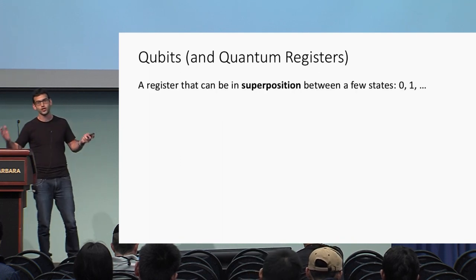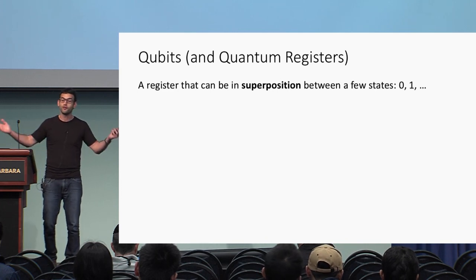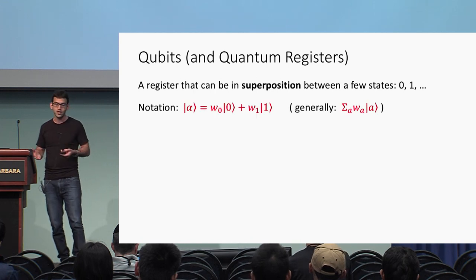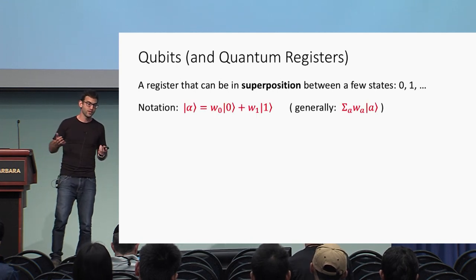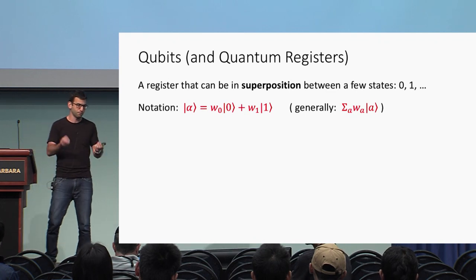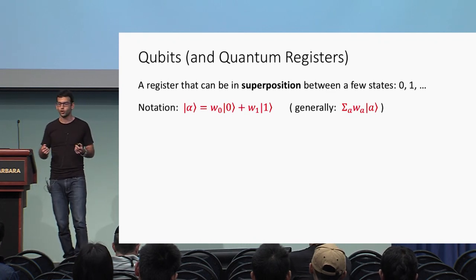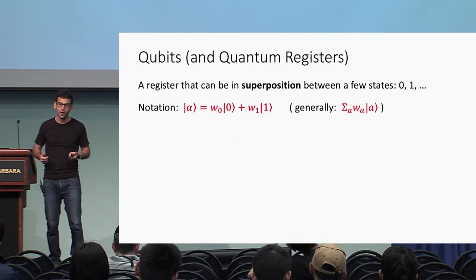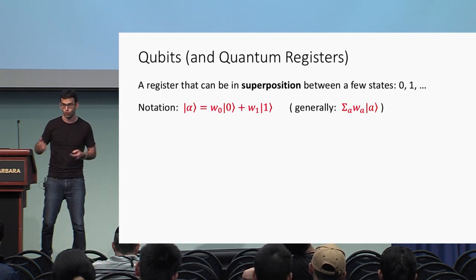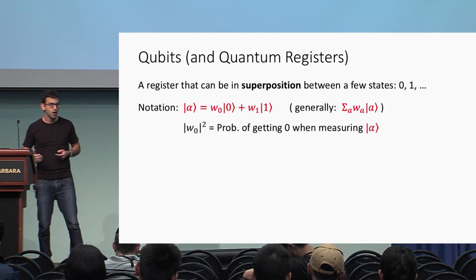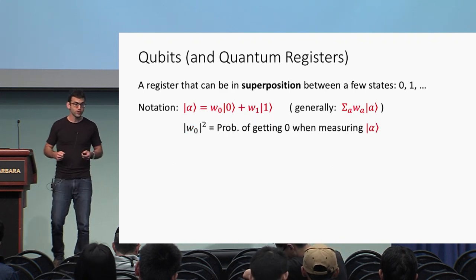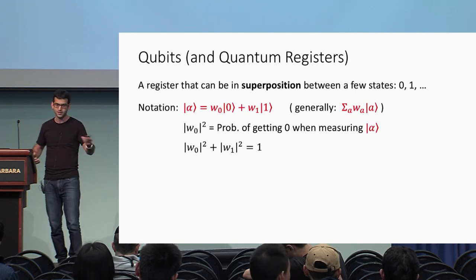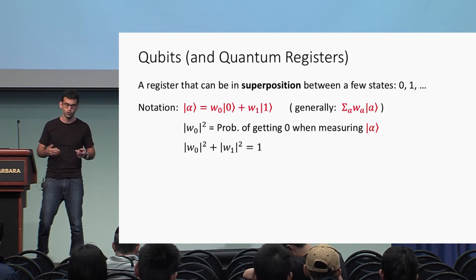A quantum register is a register that can be in superposition between a few classical states. If these two states are just 0 and 1, we call it a qubit. We use the Dirac notation, which presents a quantum state as a linear combination of classical states, where the coefficients w0 and w1 are related to the probability of measuring 0 or 1. In particular, the probability of getting 0 is the amplitude squared of w0, and the sum of squares of all amplitudes should equal 1.